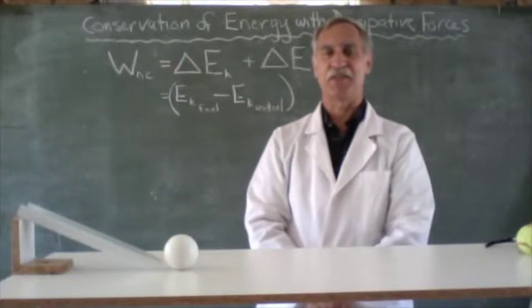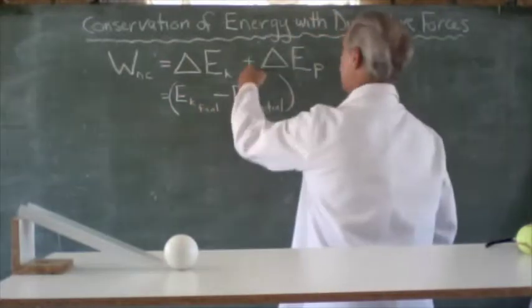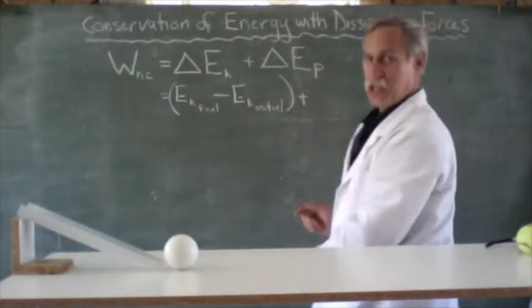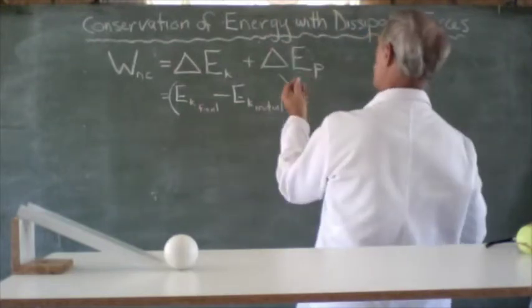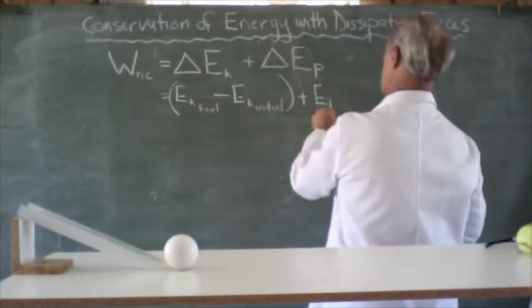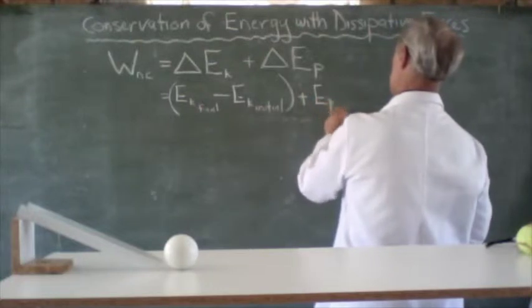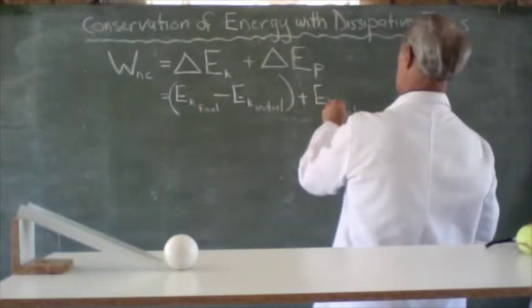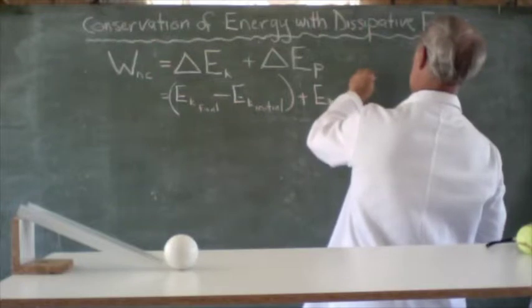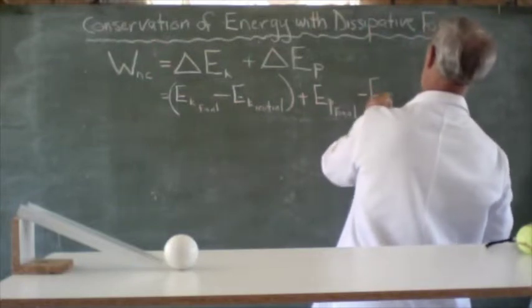The final state minus the initial state. Plus what would a change of potential energy be? It would be EP final minus EP initial.